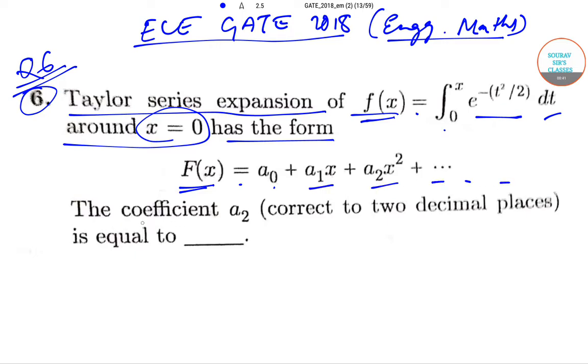We need to find the coefficient a₂ correct to two decimal places.